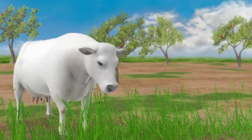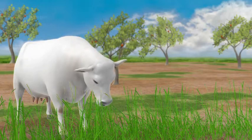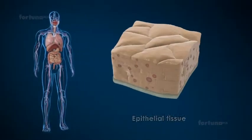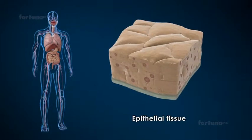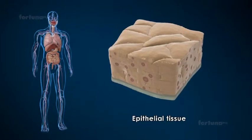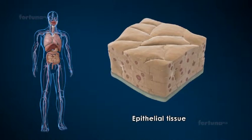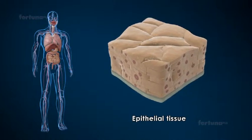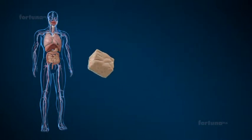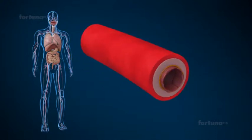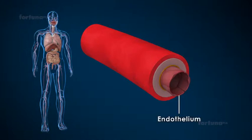Animals have a much wider variety of tissues. Epithelial tissue consists of closely packed cells covering the entirety of the body's external surface and lining most internal organs. In some cases, a specialized type of epithelial tissue known as endothelium lines blood and lymphatic vessels internally.